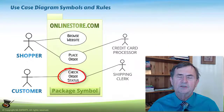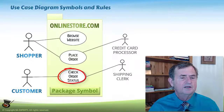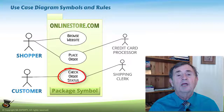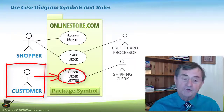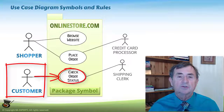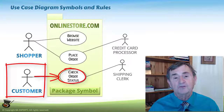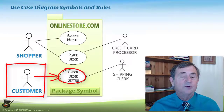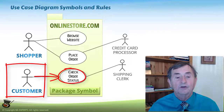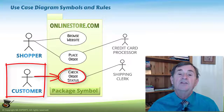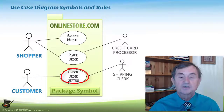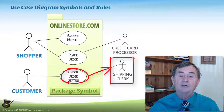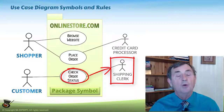The Check Order Status use case is a little different from the others because this is something you can't do as a shopper — you have to have placed an order, meaning you have to have become a customer, in order to use it. So we've introduced an actor called a customer. Until a customer has logged in and we know they are a known customer, they appear under the generic shopper actor. There may be other use cases they could access as a customer, but here we're only showing Check Order Status, which also involves a shipping clerk who provides information about when the package was shipped and the status of the order.